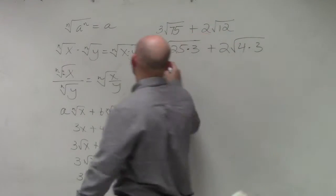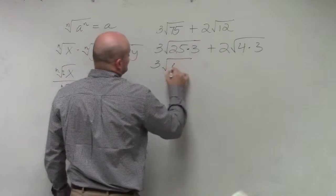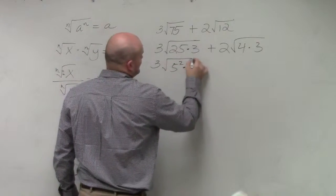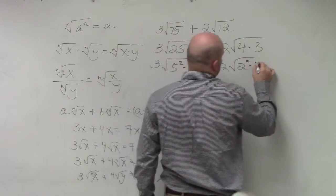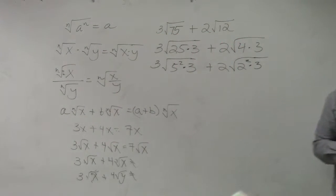Just to kind of go back, take it a little slow. Remember, I can rewrite this as 5 squared times 3, plus 2 times 2 squared times 3. I'm trying to help those students that are still having trouble with simplifying.